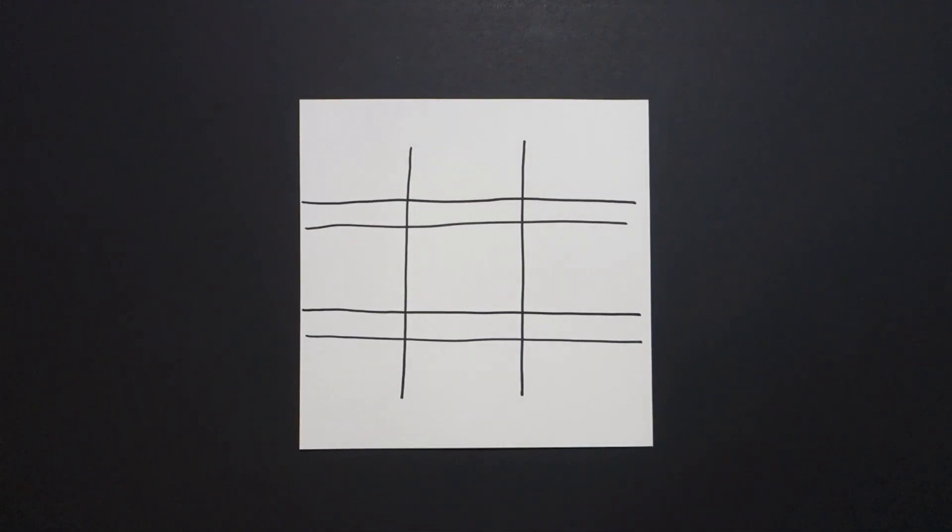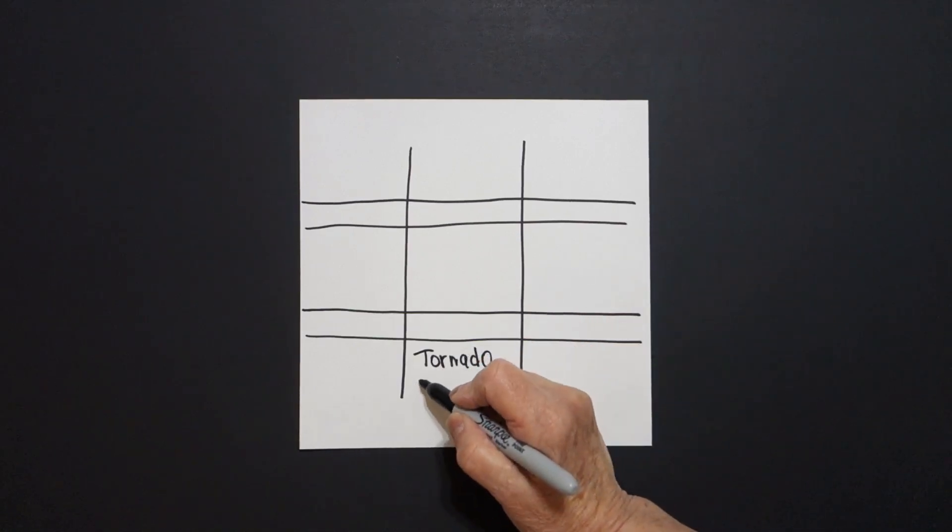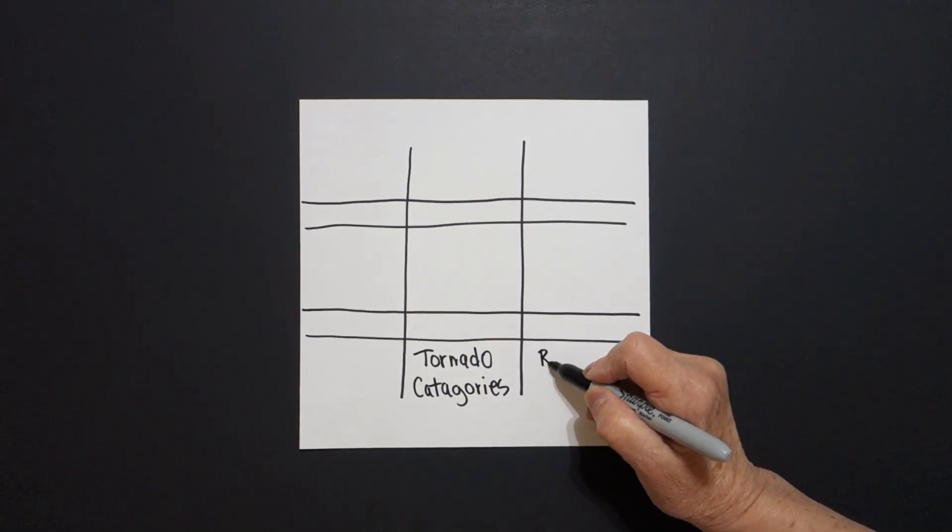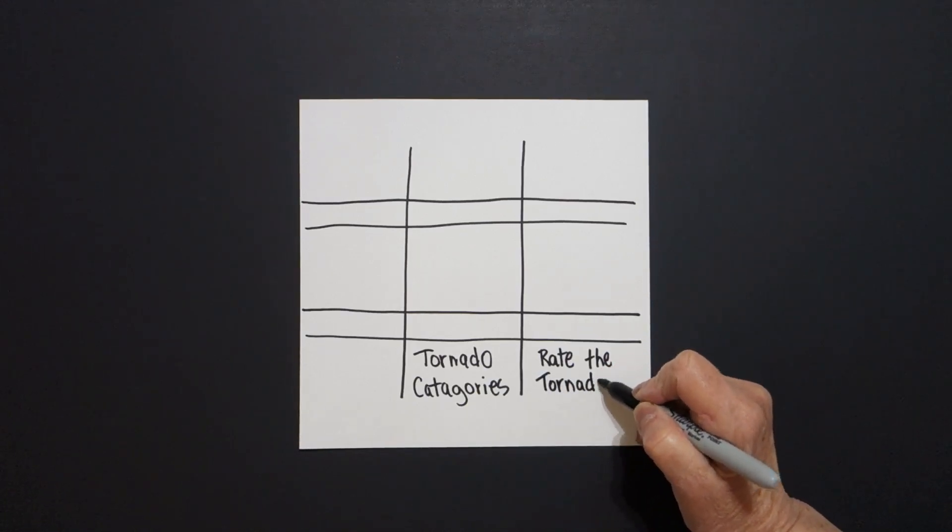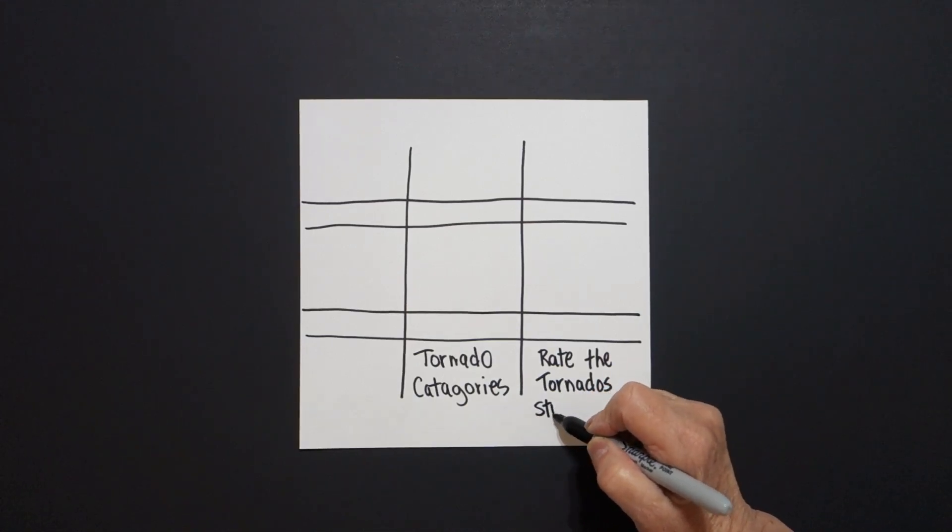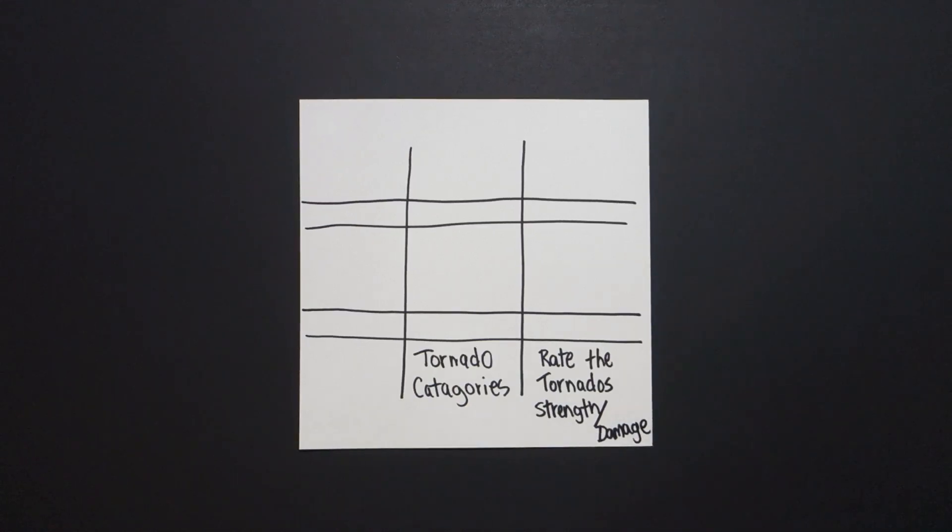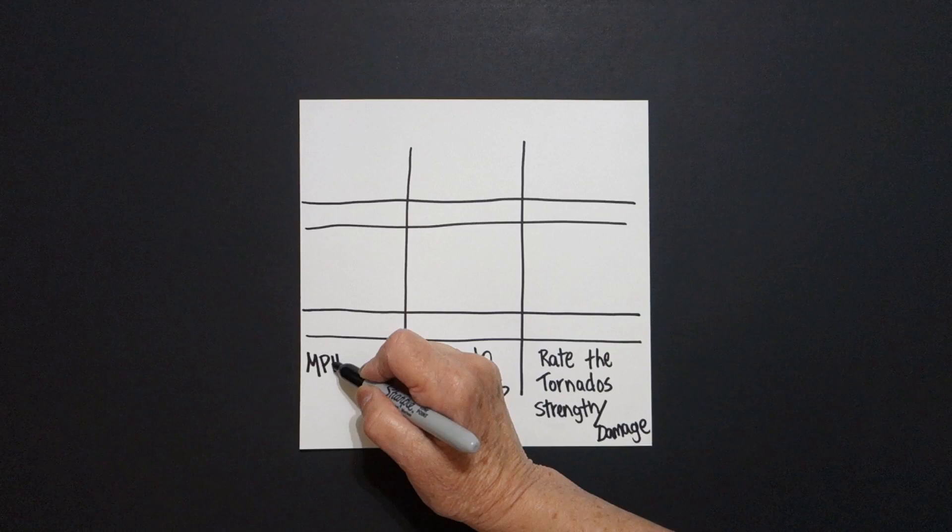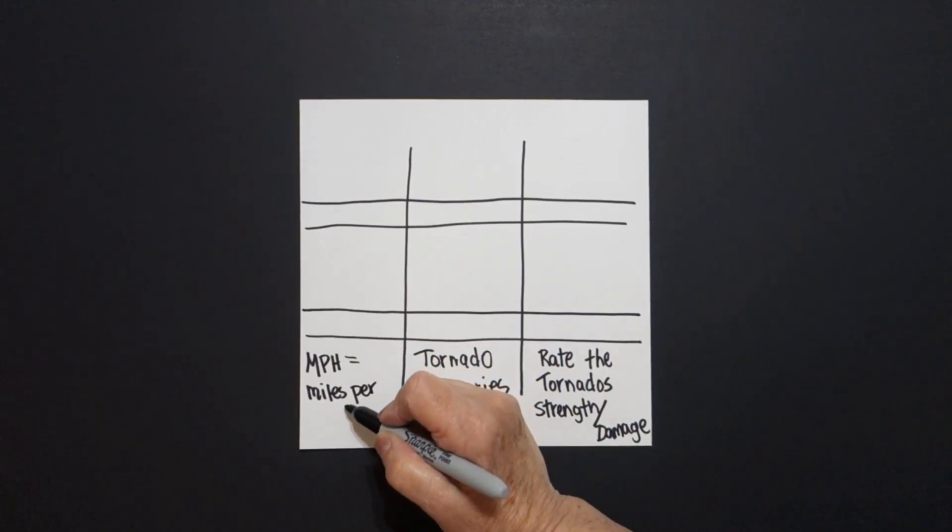What we're doing is a sequence of events. We're going to put our information in these spaces. So number one is write tornado categories. The tornado categories are going to be divided into the rate of the tornado's strength, and we're going to do that through the damage that they cause, which I thought was a real interesting way of delivering this kind of information. And what we're going to be concerned with, so what you will know, every time you see MPH, that equals miles per hour.